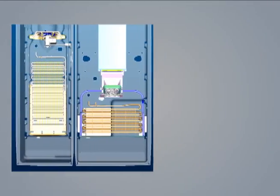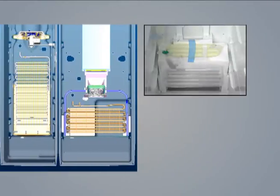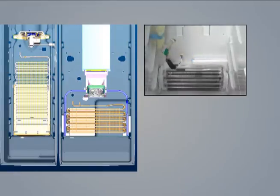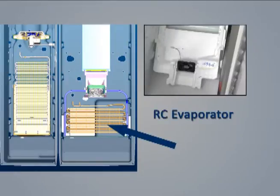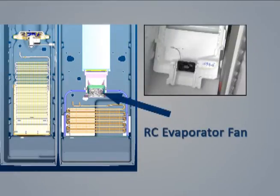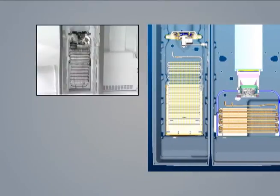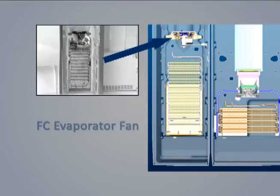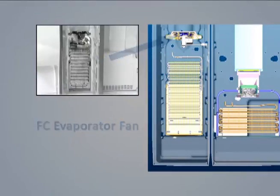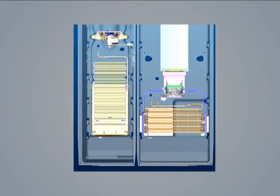On the right side of this cutaway, we can see the actual location of the RC evaporator and the RC fan. On the left side of this diagram, we see the FC evaporator and the FC fan. There are no air passageways between the two compartments.